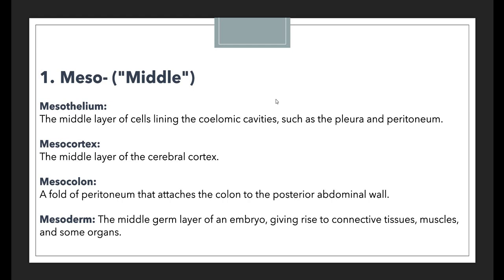Then we have mesoderm. Mesoderm means the middle layer of an embryo, giving rise to connective tissues, muscles, and some organs. Again, the middle germ layer is used to describe the mesoderm. So meso means middle — the middle of something. These are all the examples related to the meso prefix, which denotes middle.